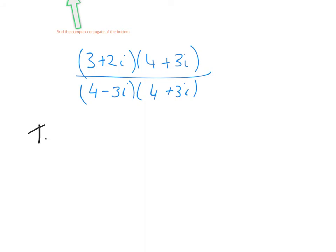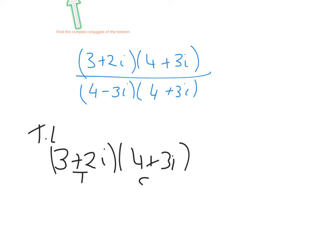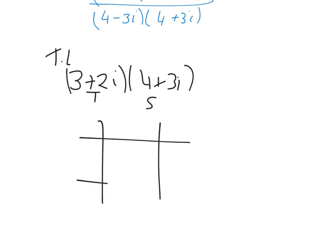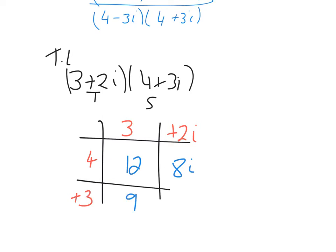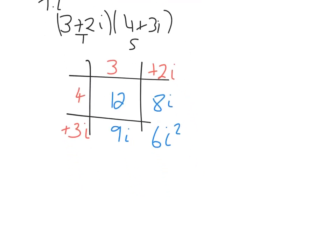Starting with the top line: three plus two i multiplied by four plus three i. Using box multiplication, on the top I have three and plus two i, on the side I have four and plus three i. Four times three is 12, four times two i is 8i, three i times three is 9i, and three i times two i is 6i squared. Since i squared equals minus one, that gives 6 times minus one, which is minus six.